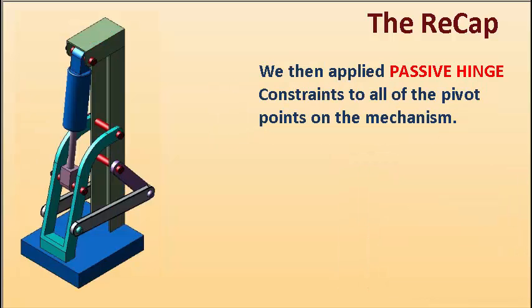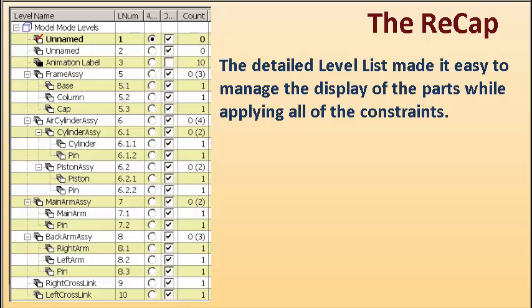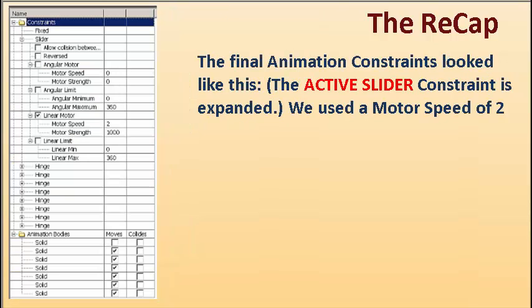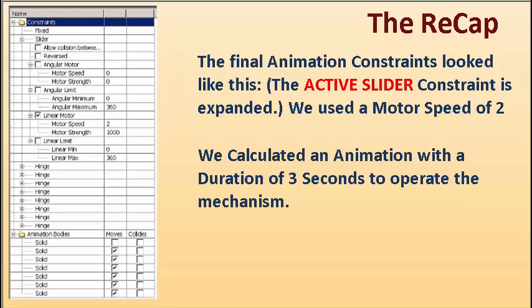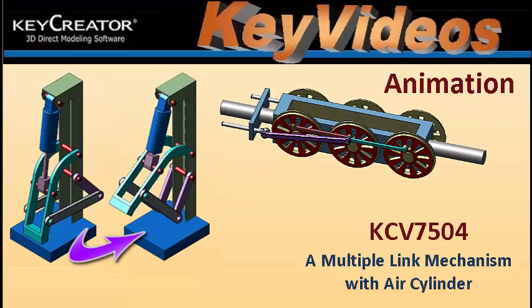We then applied passive hinge constraints to all of the pivot points on the mechanism. The detailed level list made it easy to manage the display of the parts while applying all of the constraints. The active slider constraint is expanded, and we used a motor speed of two. We calculated an animation with a duration of three seconds to operate the mechanism.